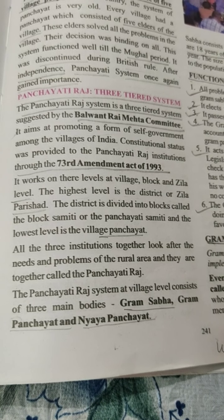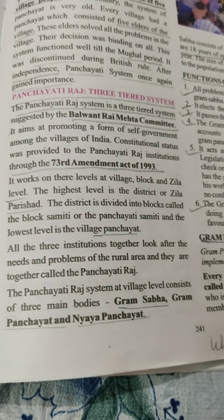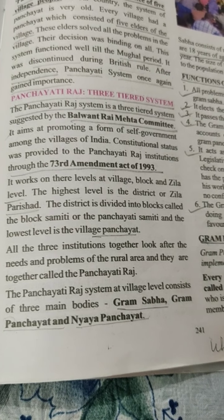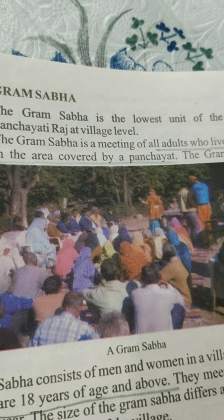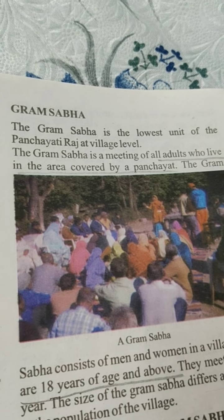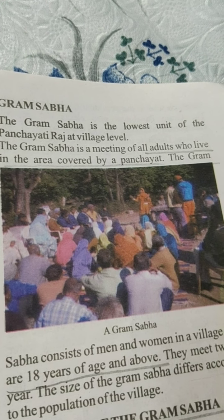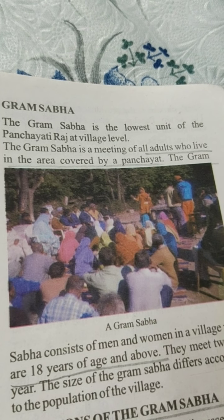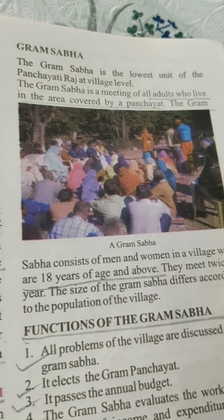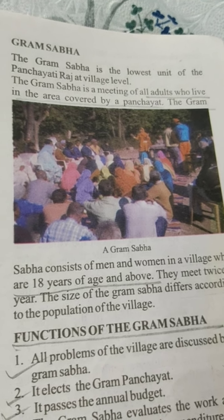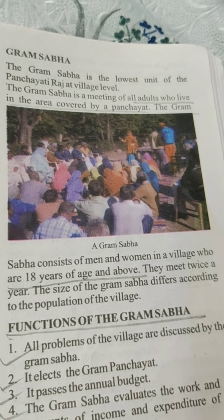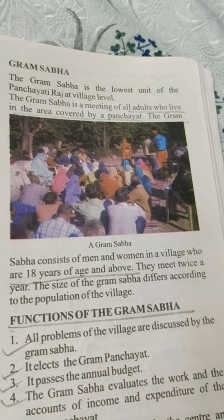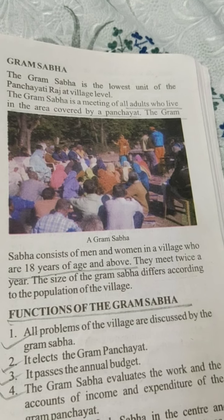The Panchayati Raj system at the village level consists of three main bodies: Gram Sabha, Gram Panchayat, and Nyaya Panchayat. First, we will discuss Gram Sabha. What is Gram Sabha? The Gram Sabha is the lowest unit of the Panchayati Raj at village level. The Gram Sabha is the meeting of all adults who live in the area covered by a Panchayat. The Gram Sabha consists of men and women in a village who are 18 years of age and above. They meet twice a year. The size of the Gram Sabha differs according to the population of the village.